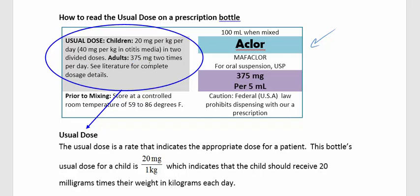For adults, 375 mg two times per day. The usual dose is a guideline that tells us what is usually safe to give. It is a rate that indicates the appropriate dose for a patient. For a child, 20 mg per 1 kg indicates that the child should receive 20 mg times their weight in kg each day.